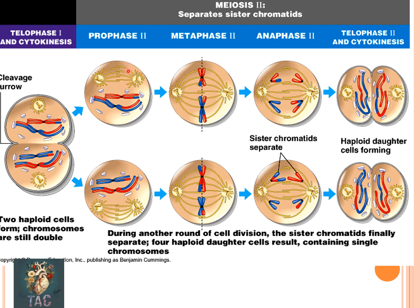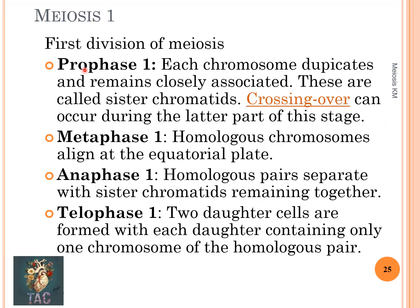After cleavage and telophase two, meiosis two starts immediately. It resembles mitosis — the only difference is that there is no DNA replication. In prophase one, each chromosome duplicates and remains closely associated as sister chromatids; crossing over occurs during this phase. In metaphase one, homologous chromosomes align at the equatorial plate. In anaphase one, the homologous pair separates with sister chromatids remaining together. In telophase, two daughter cells are formed, each containing only one chromosome of the homologous pair.